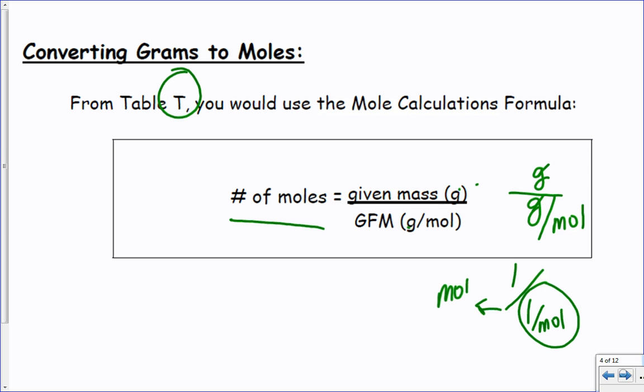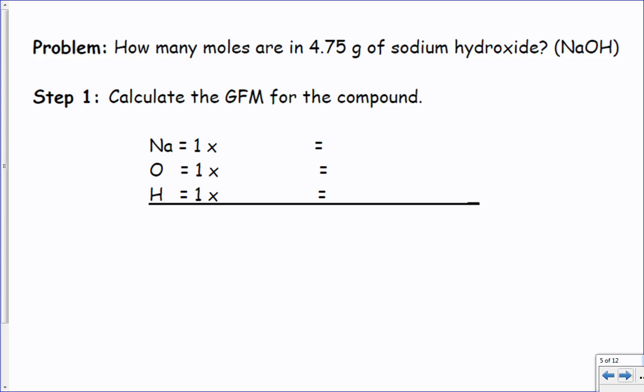Calculate gram formula mass of a compound is step one. The problem says how many moles are in 4.75 grams of sodium hydroxide, NaOH. Let's do the gram formula mass. Sodium is 23 grams times one is 23. O is 16 times one is 16. Hydrogen is one. That's 23 plus 16 plus 1, so I have 40 grams per mole.